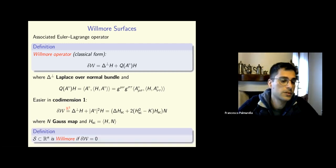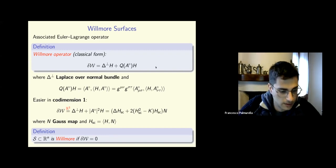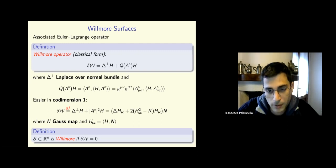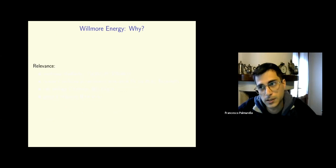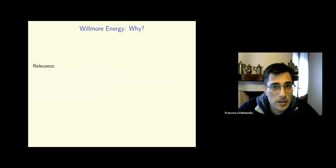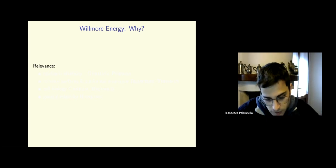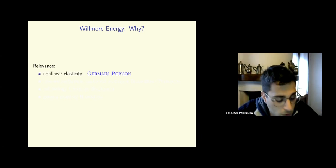A Willmore surface is a surface such that the Willmore operator vanishes identically. This applies also to non-closed surfaces, unbounded, and so on. You may be satisfied with the analytical definition, but maybe you want more motivation on why one should consider this Lagrangian, whose Euler-Lagrange equation is quite frightening. I'm going to give you very briefly a few motivations.